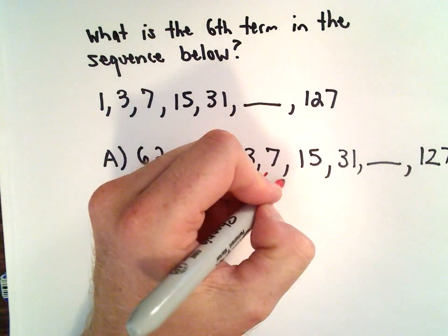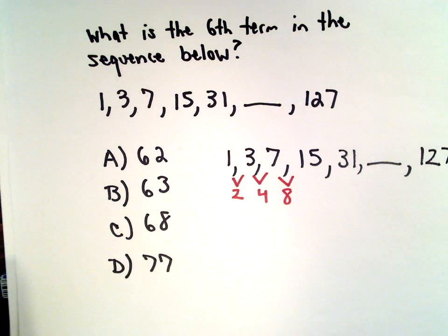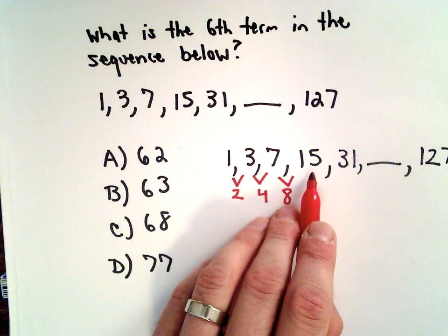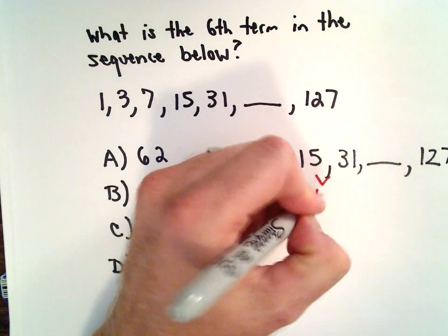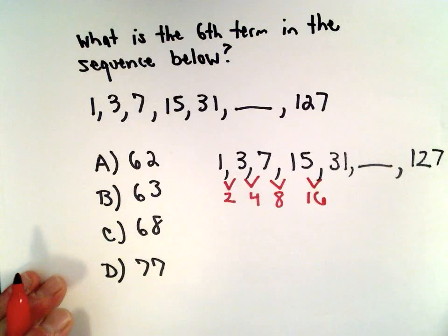15 minus 7, what's 15 minus 7? That's 8. 31 minus 15, that's 16. So now the question is, are you seeing a pattern?